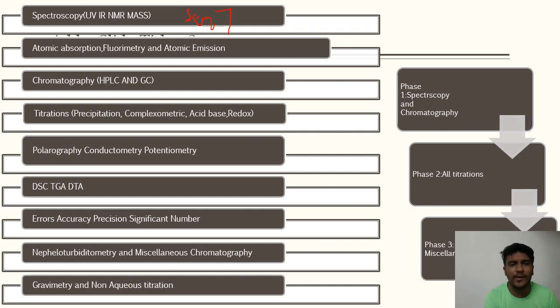Fluorimetry - you need to know the quenching. Quenching agents are very important and the factors affecting fluorescence. Also the difference between phosphorescence and fluorescence. In phosphorescence there is triplet state involved, the transition is from triplet to singlet, while in normal fluorimetry the lifespan is less and the wavelength is also less. The transition is from singlet excited to singlet ground state.